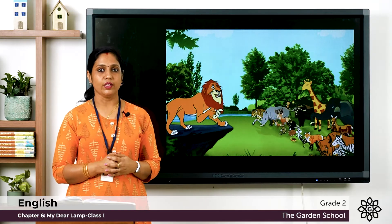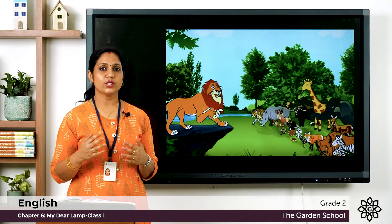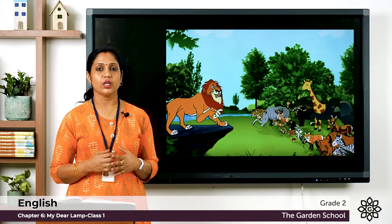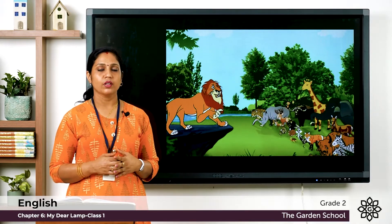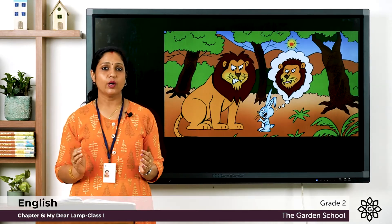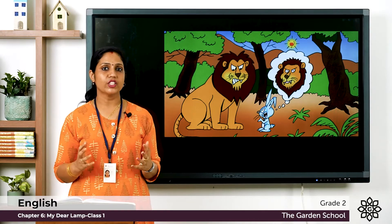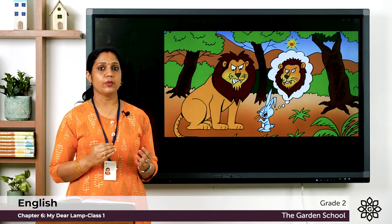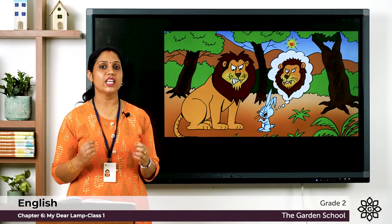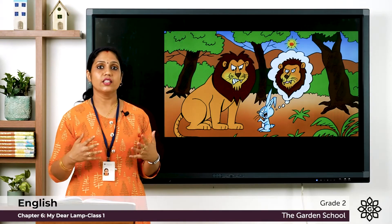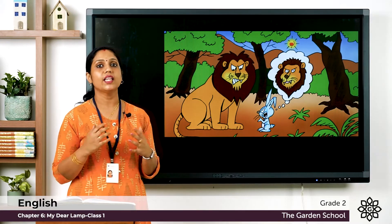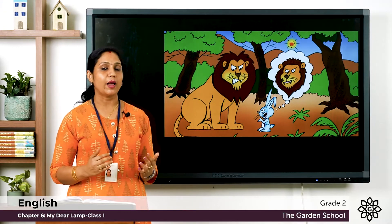One day it was the turn of a rabbit — a very clever rabbit who did not want to be eaten. He walked very slowly to the lion. By this time the lion was growing impatient and angry. When the rabbit finally arrived at sunset, the lion asked angrily why he was so late. The rabbit replied that on his way he had met another lion who claimed to be king of the forest, making this lion furious.